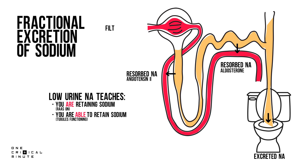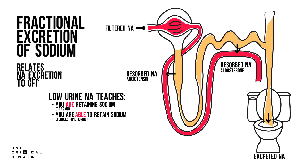You can imagine that if there is little sodium filtered through the glomerulus, your urine sodium will be low as well. So in order to know if low urine sodium is due to tubular reabsorption, we need to relate the amount of sodium we excrete to our glomerular filtration rate. This is called the fractional excretion of sodium.